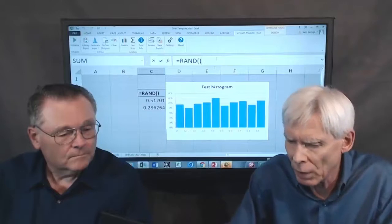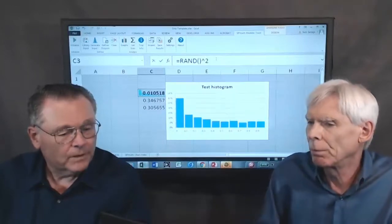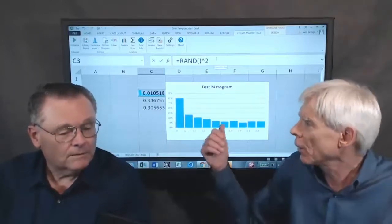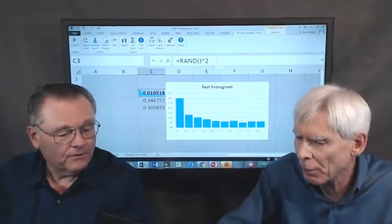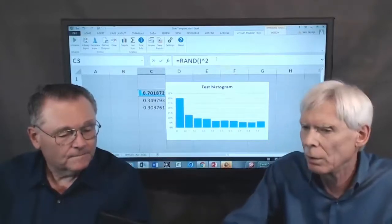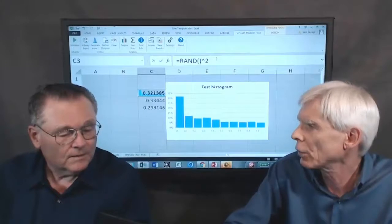And watch this. I'm going to change the formula—let me change this to RAND squared. OK. Oh, wow. A thousand trials of RAND squared. That was fast. If I press the F9 key: a thousand, a thousand, a thousand.